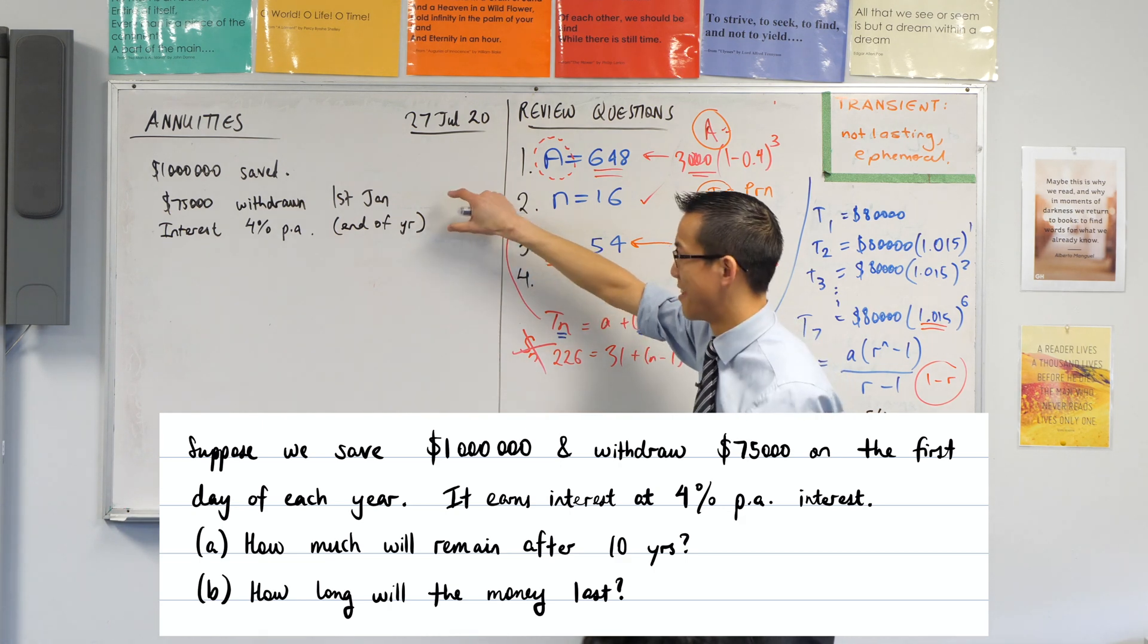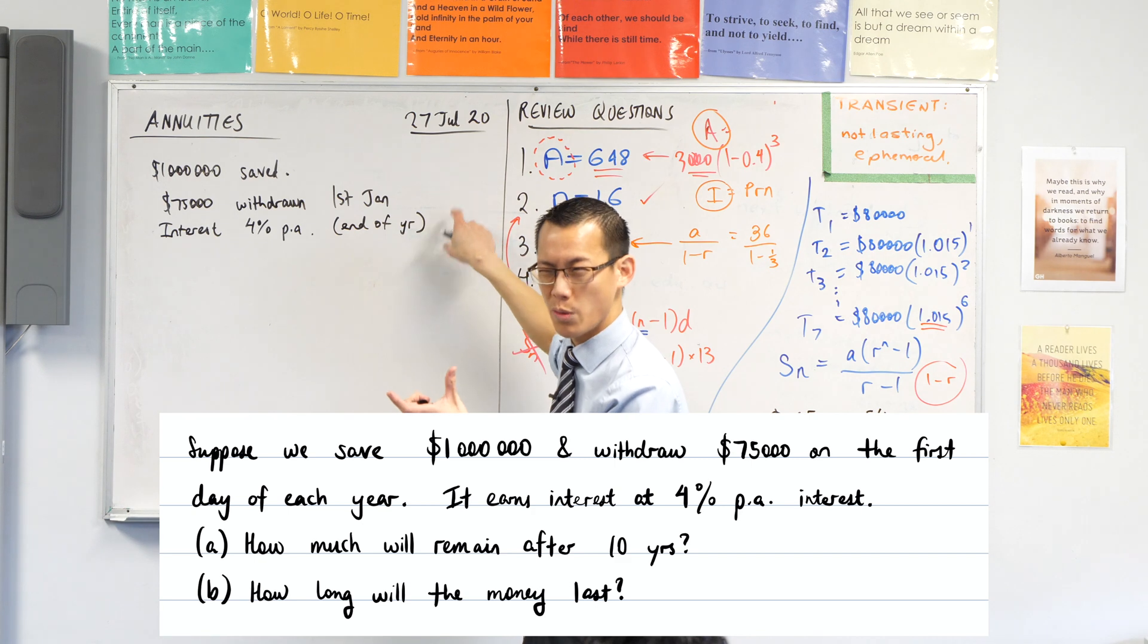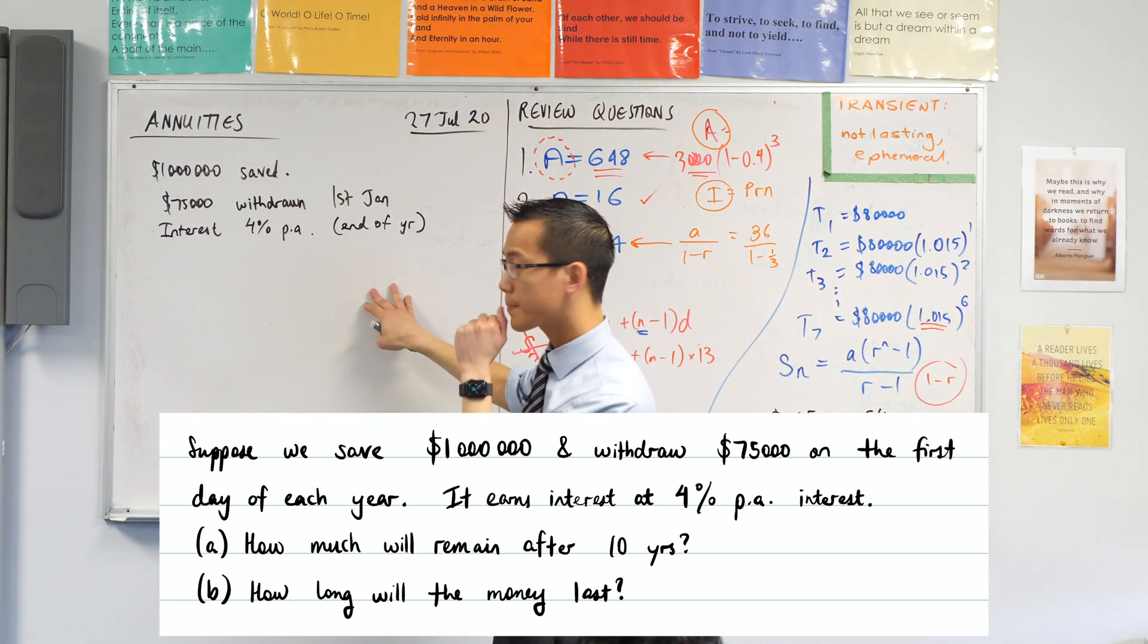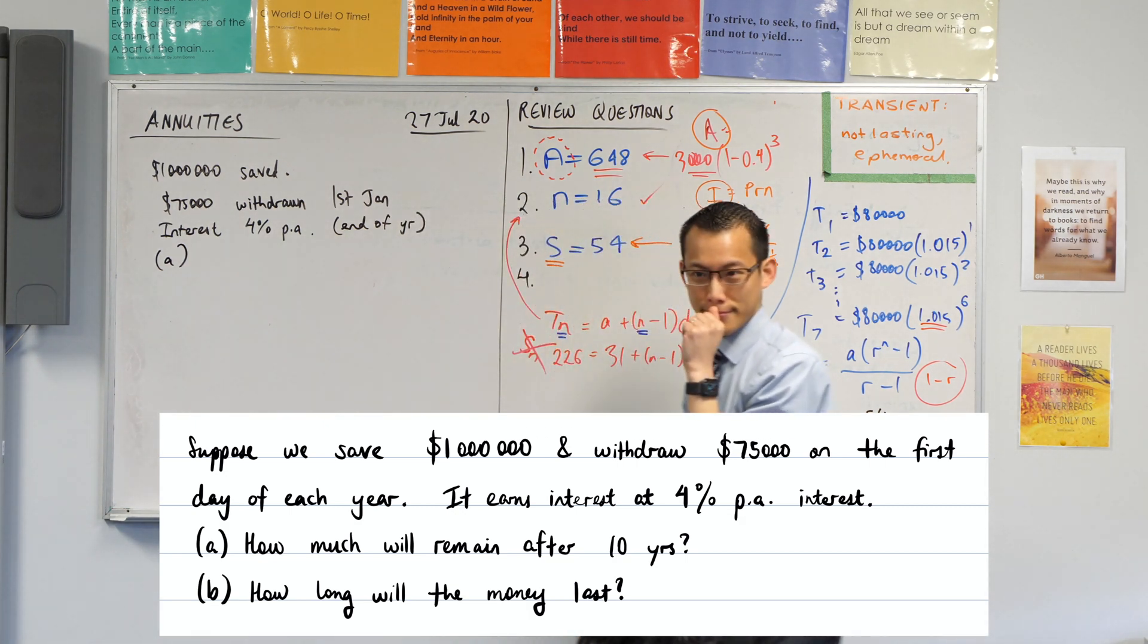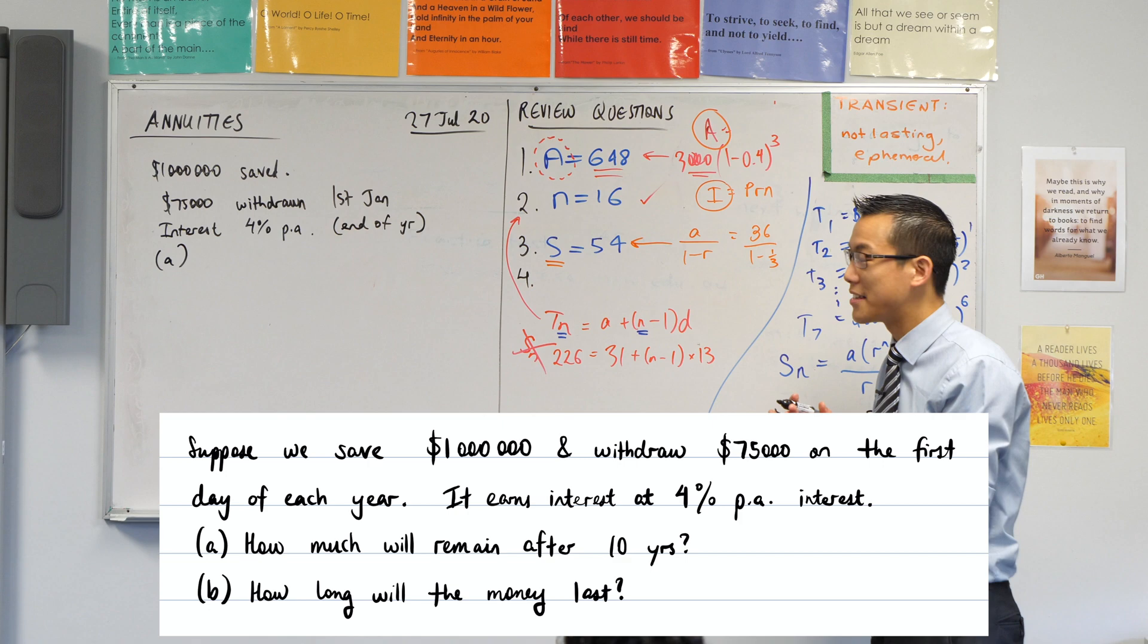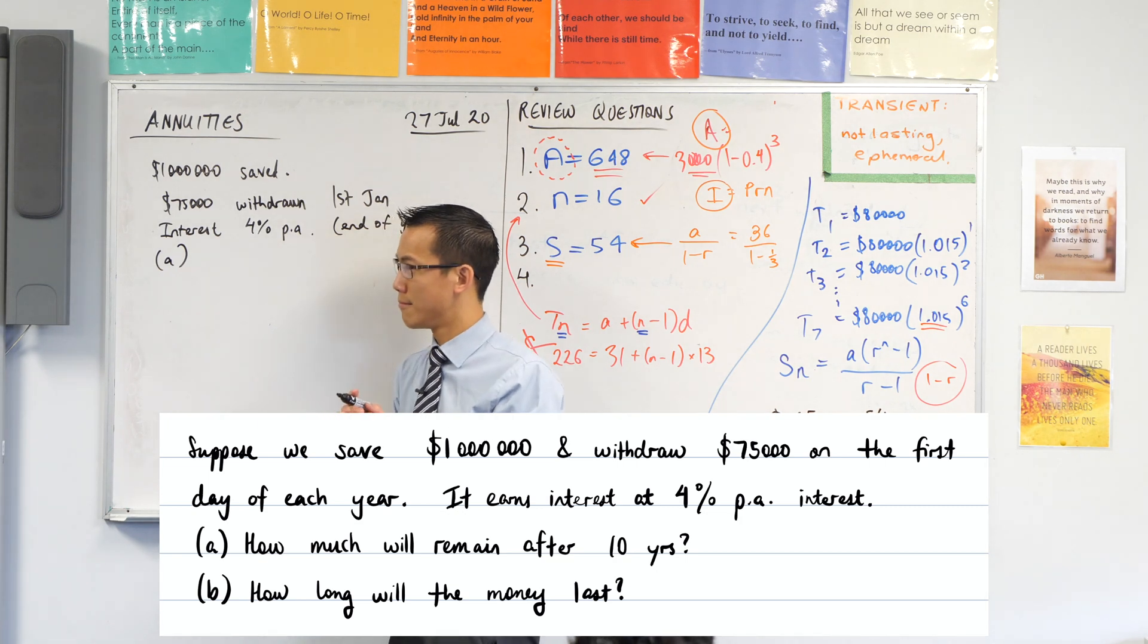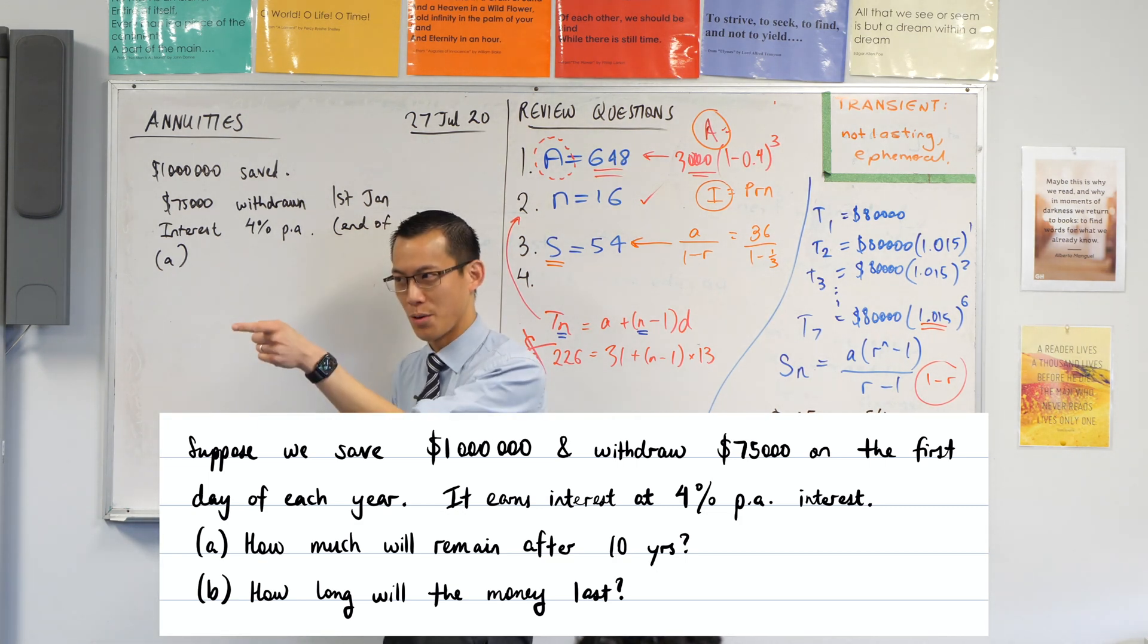So our order in our minds of what happens every single year is two things. Withdrawal first at the start and then interest happens at the end. Now, occasionally, things will be different. They will specify in the question. They'll give you more language that tells you when these things happen. But for any other assumption, we can just work with this. So read carefully. The question will tell you what's going on.